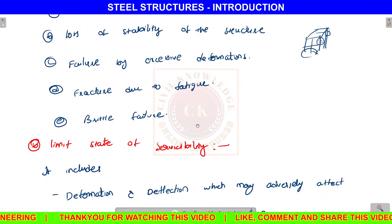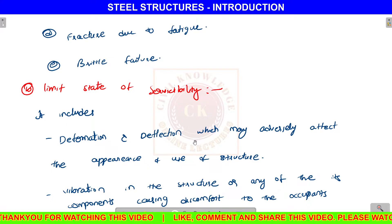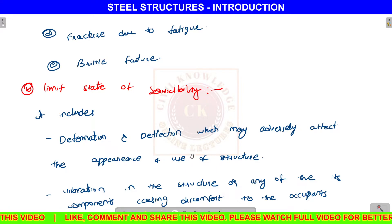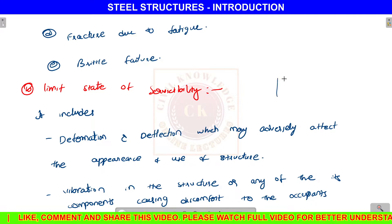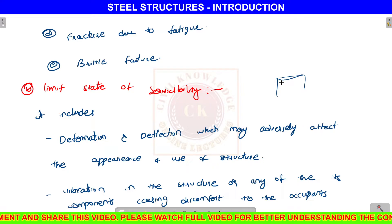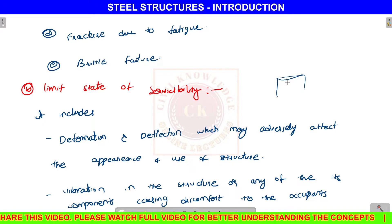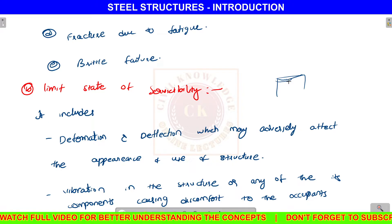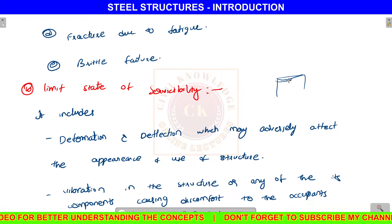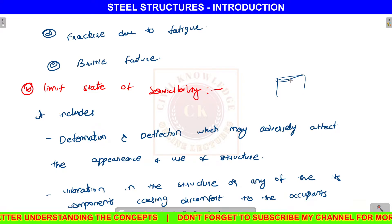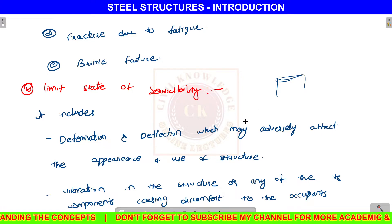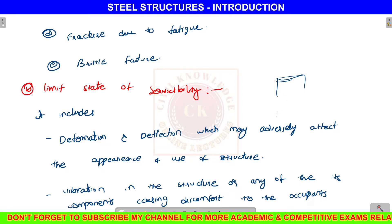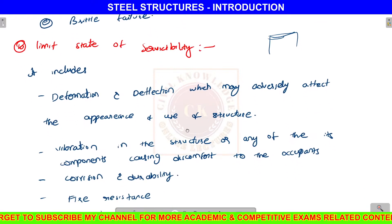Next is the limit state of serviceability. This includes deformation and deflection. Suppose there is a beam in a steel structure — there is serviceability failure due to large deformations and deflections. Secondly, loss of tension may occur. We must also consider the appearance and use of the structure. Like the appearance and use of the structure, we must check deflection. That means the limit state of serviceability. Next is vibrations in the structure.